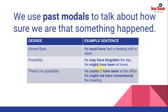When we want to express a possibility about something, we use 'may have' or 'might have.' For example: 'He may have forgotten the day' or 'He might have been at home.' Imagine you're looking for John again and your co-worker says, 'I think he felt sick — he might have been at home.' That expresses possibility.